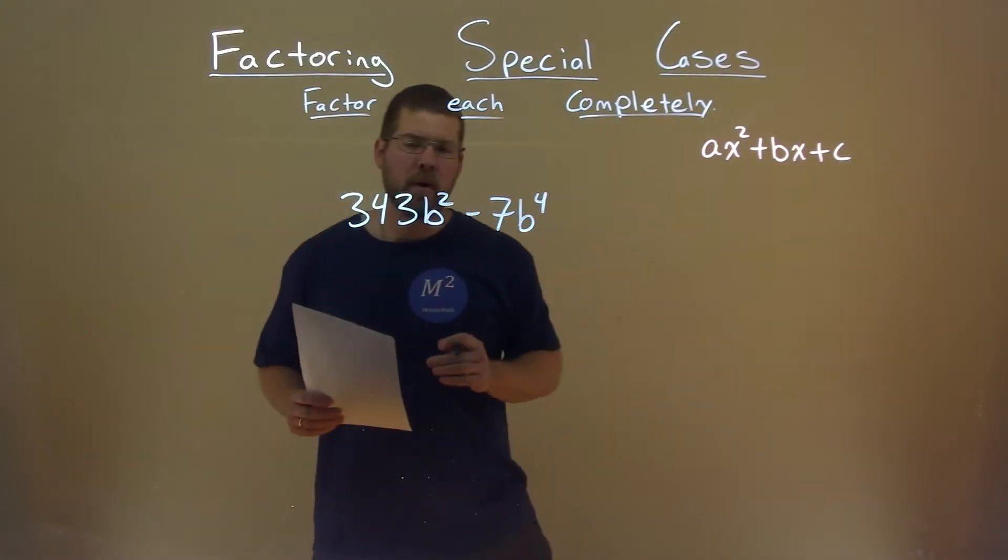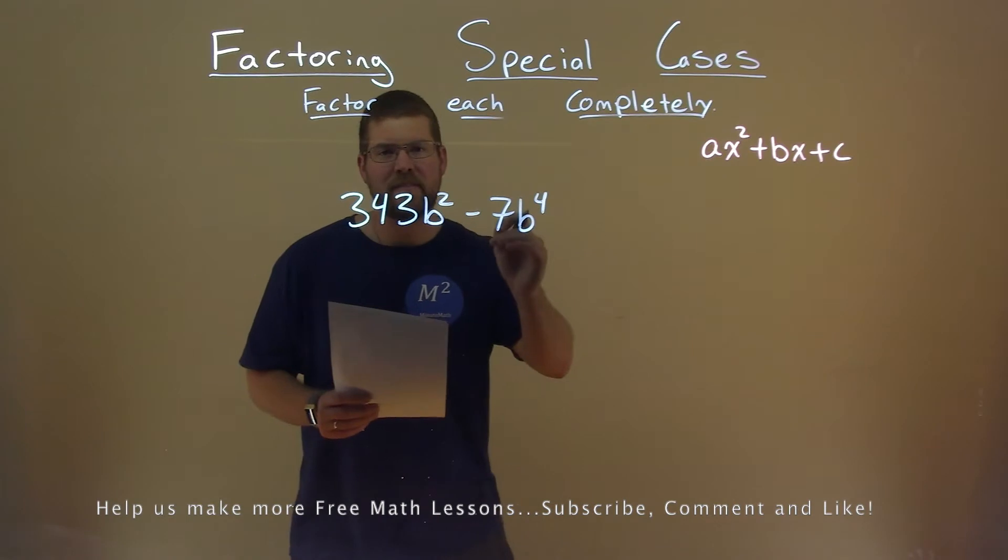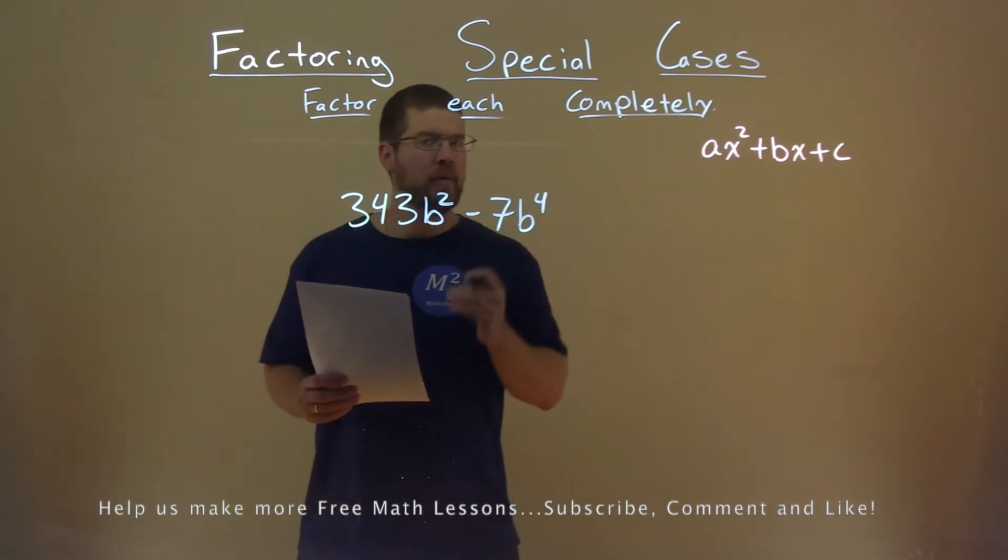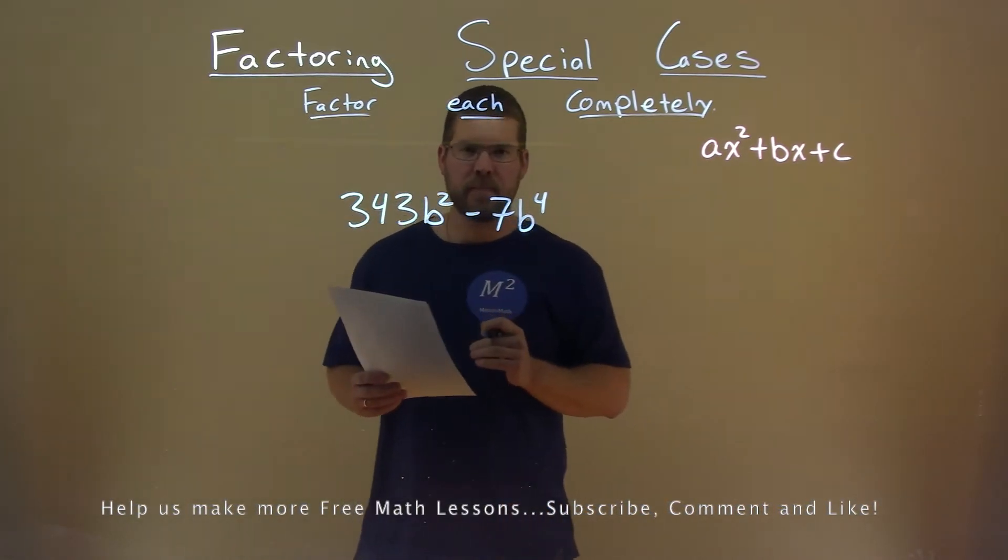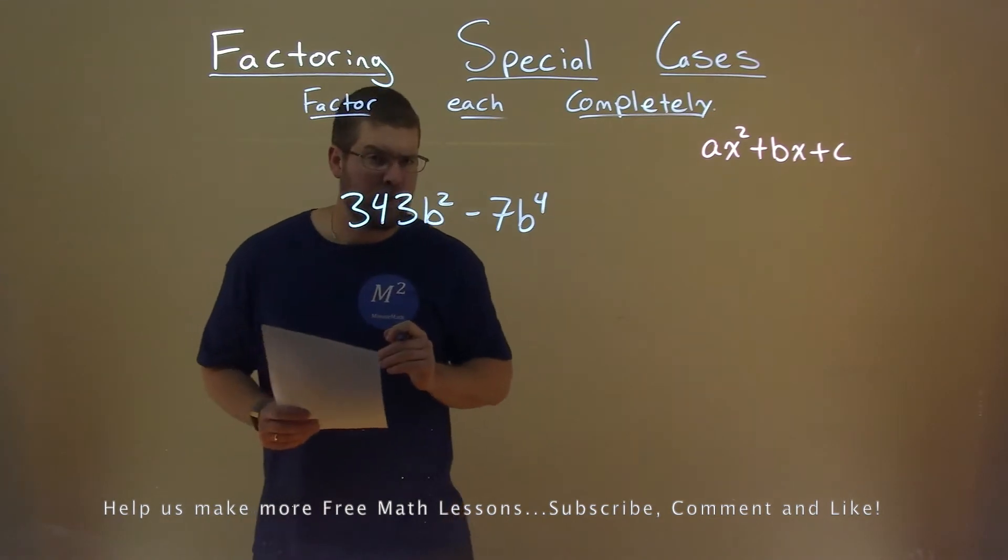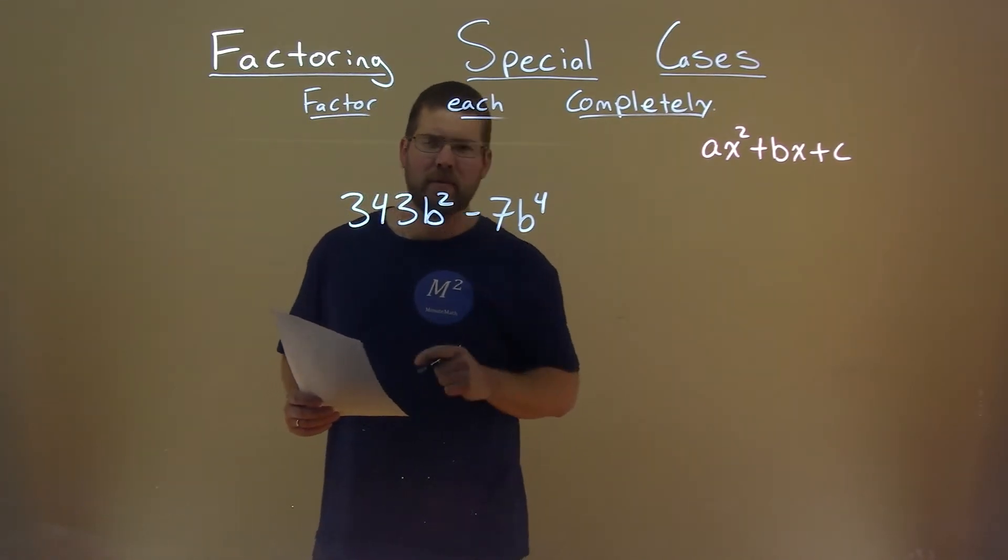We're given this problem right here, 343b squared minus 7b to the fourth power, and we want to factor this completely. Well, there's a reference for 343 that I know, and if you know it, put it in the comment section down below, but we'll see.